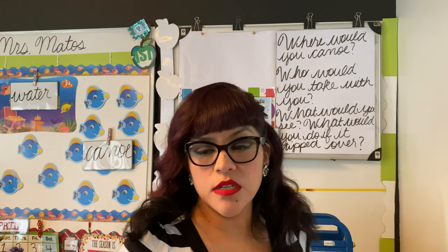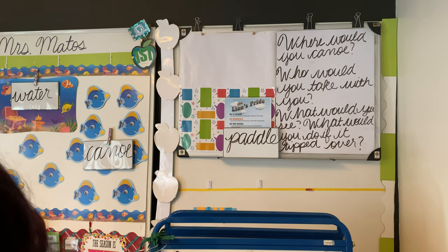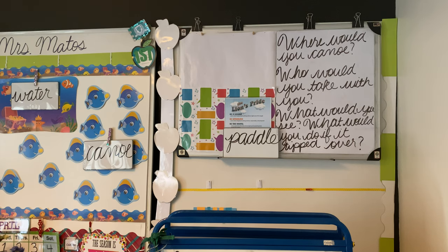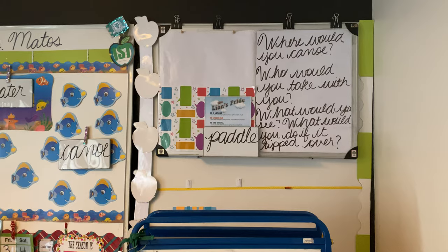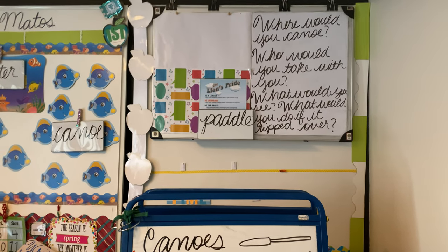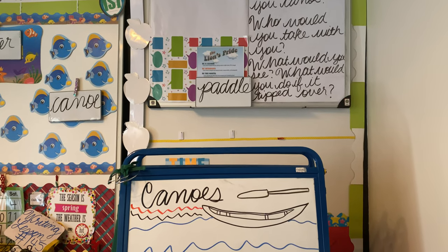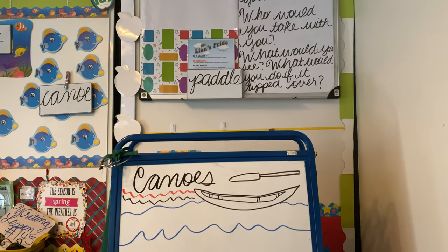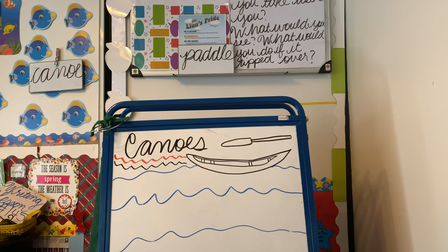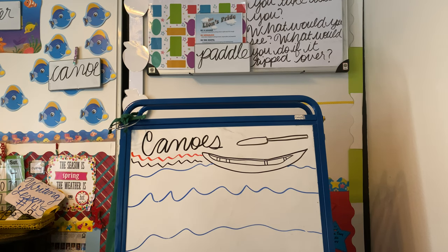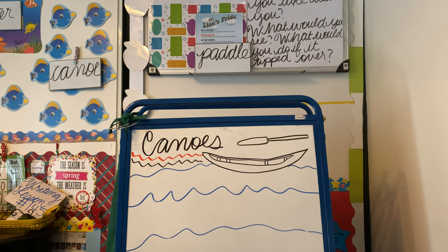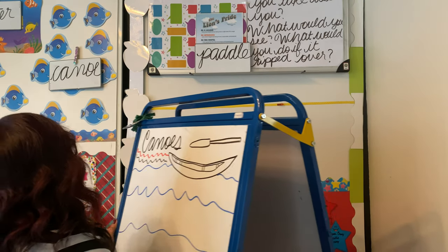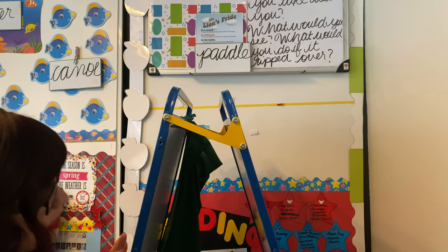So before we answer those questions together, I need to bring you down so that you guys are able to work with me and we can answer those questions. I need you to start thinking about where would you canoe, who would you take with you, what would you see, and what if your canoe would tip over — what would you do? Would you be scared? Would you be okay? Would you be nervous? So those are the questions that we're going to consider as we answer them. Let me turn this around so that we have some space to write our answers nice and neat.